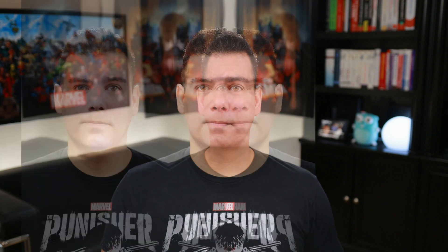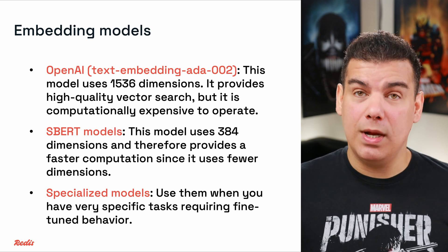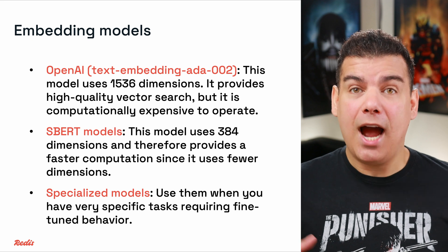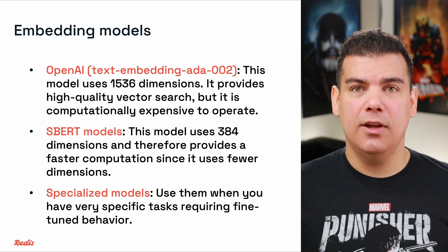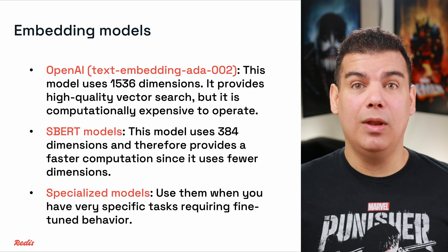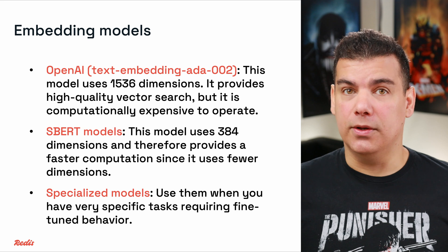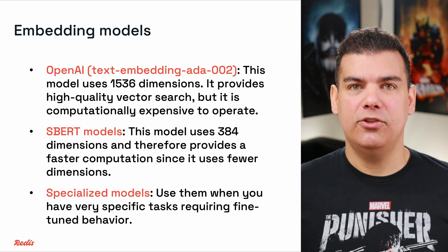Another very important technical consideration is the usage of embedding models. Embedding models transform your raw data into vector representations, and their characteristics profoundly affect search performance. The models you choose determine vector properties that cascade through your entire search system. Different models create fundamentally different vector spaces. OpenAI's text-embedding-ada-002, with 1536 dimensions, provides high quality but is computationally expensive. SBERT models, with 384 dimensions, provide faster computation due to lower dimensionality. Specialized domain models may offer better semantic representation but only for very specific tasks.